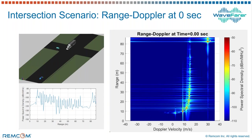The range-Doppler plot here shows the truck over here. At the moment, the car is stationary, and this is most likely the scattering coming back from the vehicle at the intersection.